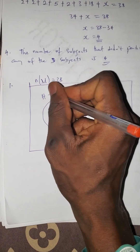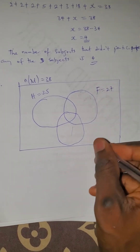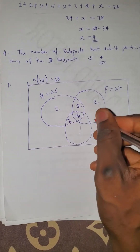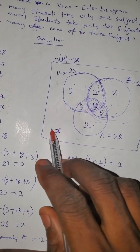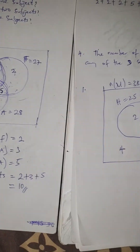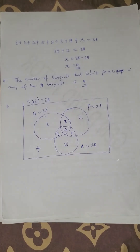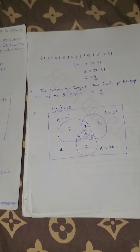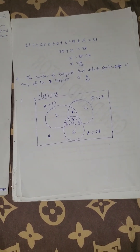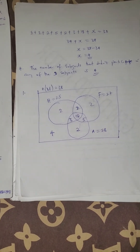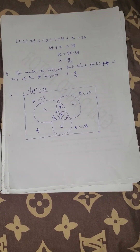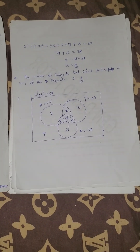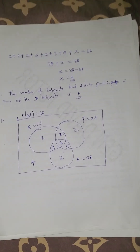To summarize the Venn diagram: universal set is 38, History is 25, French is 27, Greek is 28, the center (all three) is 18, the pairwise-only regions are 2, 3, and 5, the only-one-subject regions are each 2, and x equals 4. There are shortcut methods to solve this without full Venn diagram analysis — check other videos on the channel. Thank you, like, subscribe, and follow for more videos.